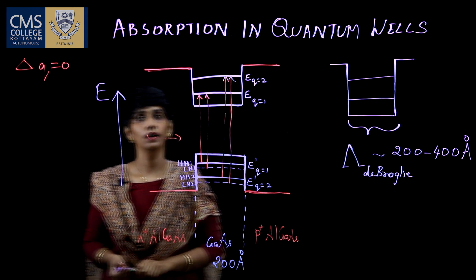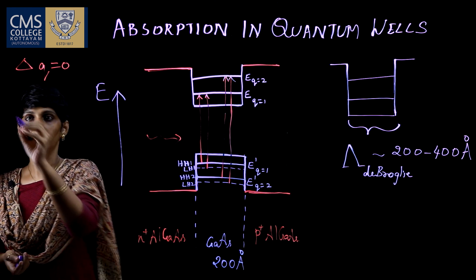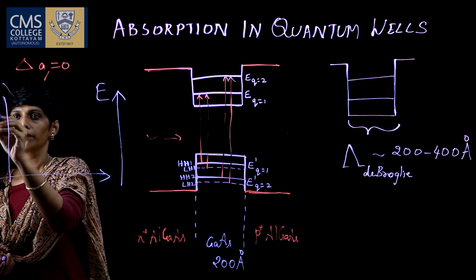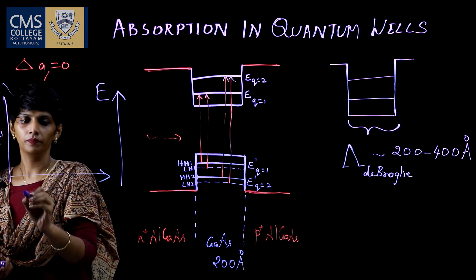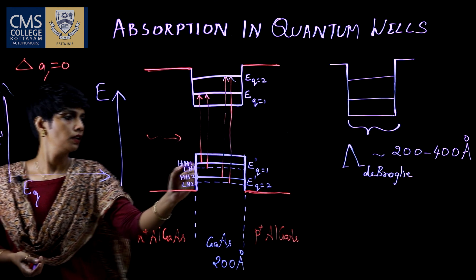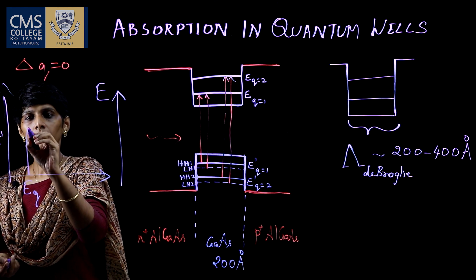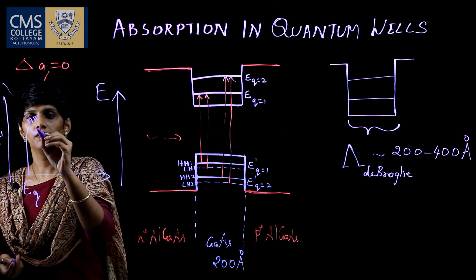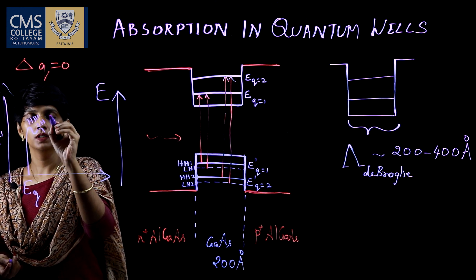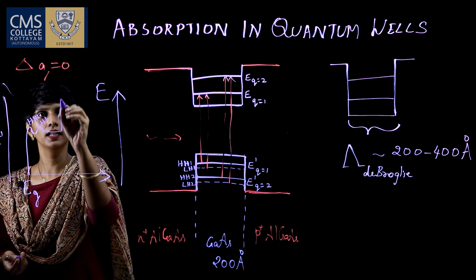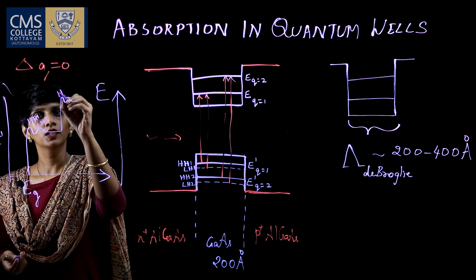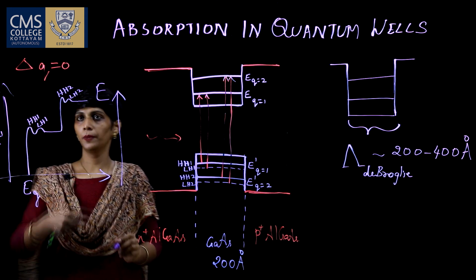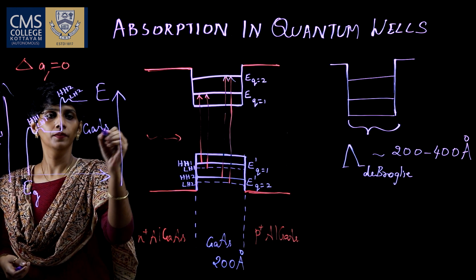When we look at the absorption spectrum for this quantum well structure, we see resonances: one resonance for the heavy hole first energy level, one for the light hole first energy level, and then resonances for the heavy hole and light hole second energy levels. So we get an absorption spectrum with these distinct peaks.